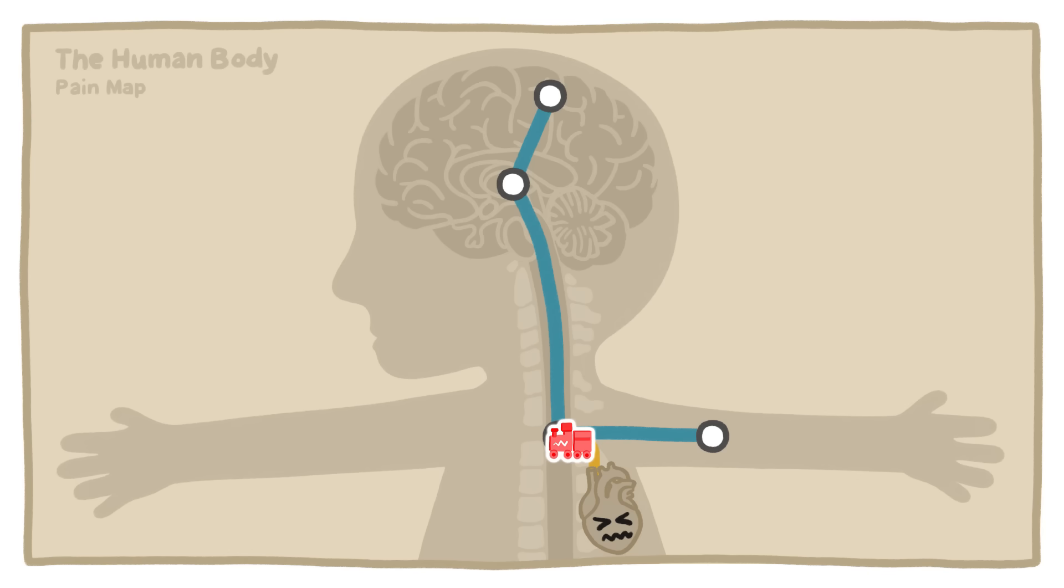Specifically, pain from an ailing heart often gets funneled onto nerve pathways in the spinal cord that carry sensations from the arm, which in turn light up the part of the brain that senses arm pain. This is why people tend to feel crushing pain in their left arms during a heart attack.